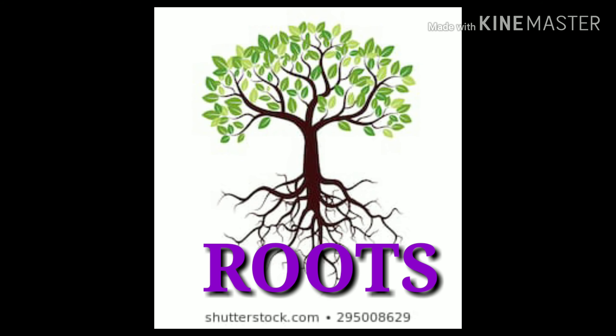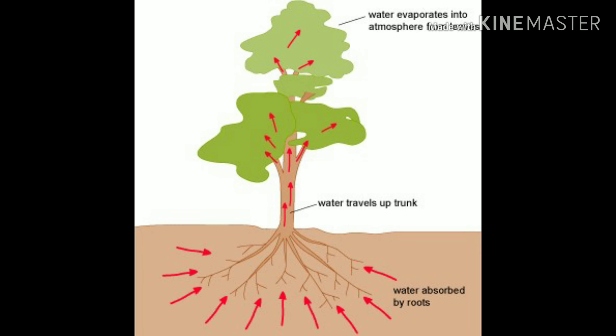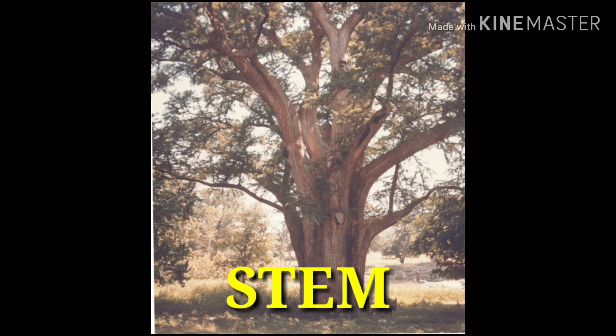The teacher should then explain the roots. A plant has roots; the roots grow below the surface of the ground. Roots support the plant by holding it firmly in the soil. They absorb water and nutrients from the soil and pass them to the stem.